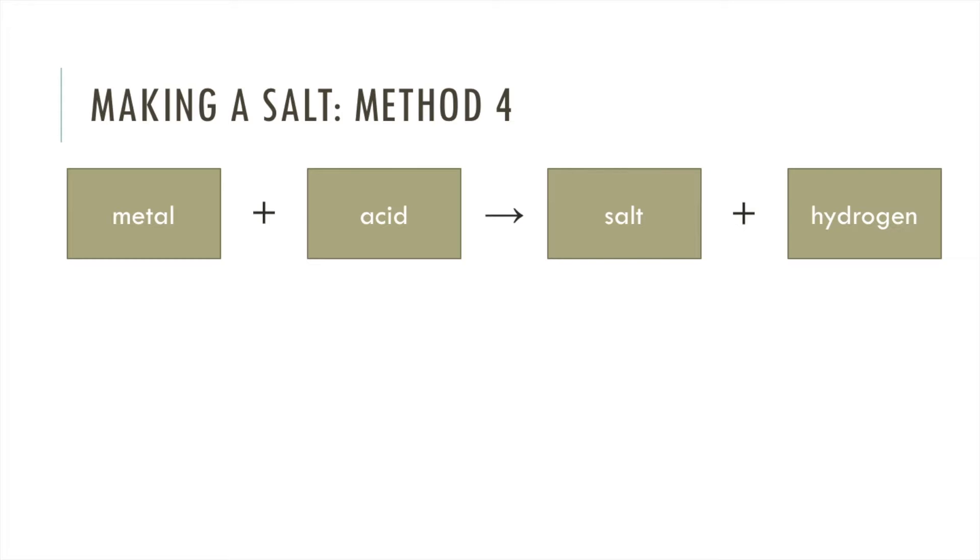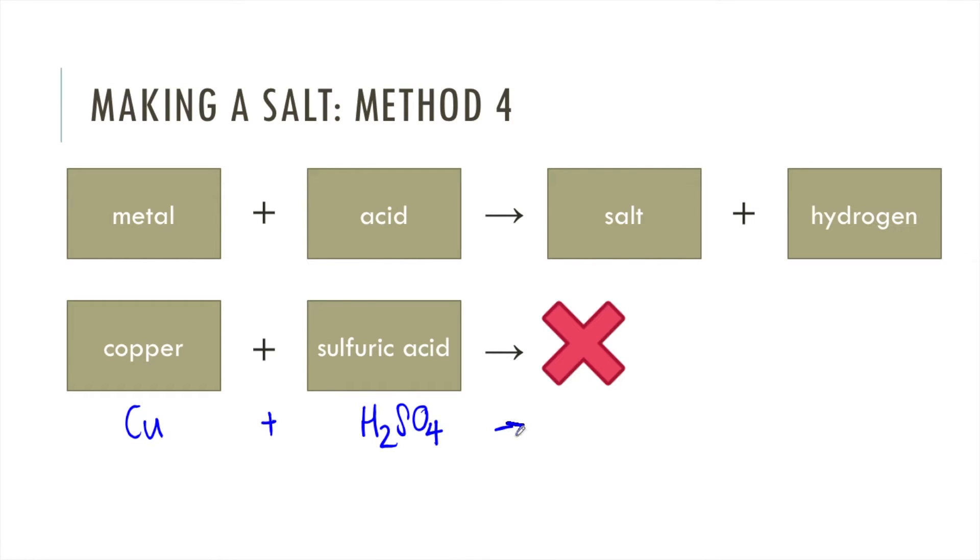The fourth method you will have learnt about to make a salt is reacting a metal and an acid to make a salt and hydrogen. Now in the case of copper and sulfuric acid, this doesn't happen. So let's have a look at the chemical equation to try and figure out why. We've got copper plus H2SO4, and theoretically that gives us copper sulfate and hydrogen. What you can see here, the hydrogen has been replaced with copper, or should we say we're getting copper to displace hydrogen. This is an example of a displacement reaction.